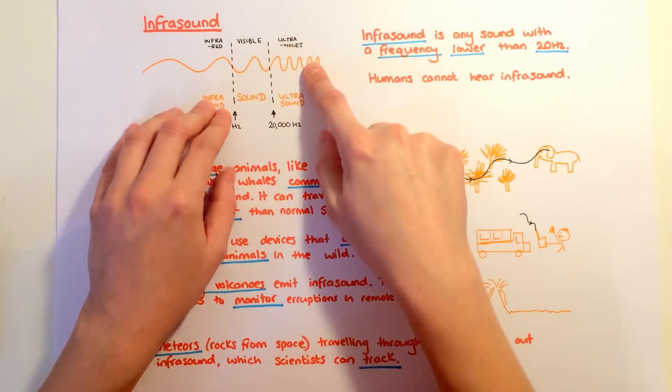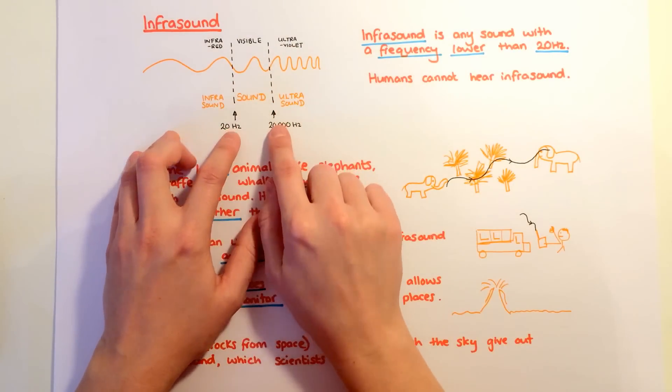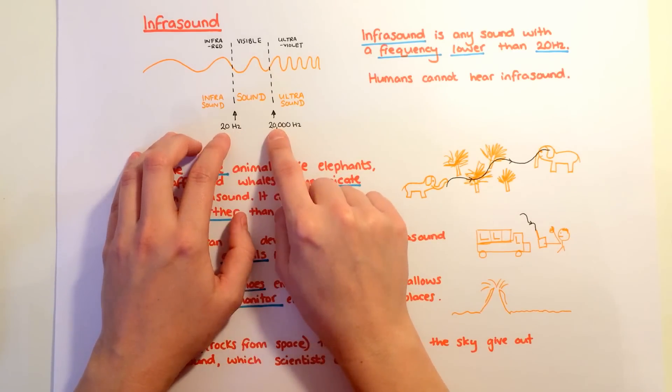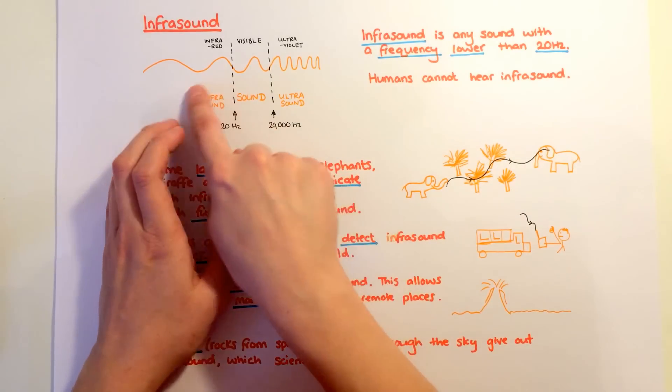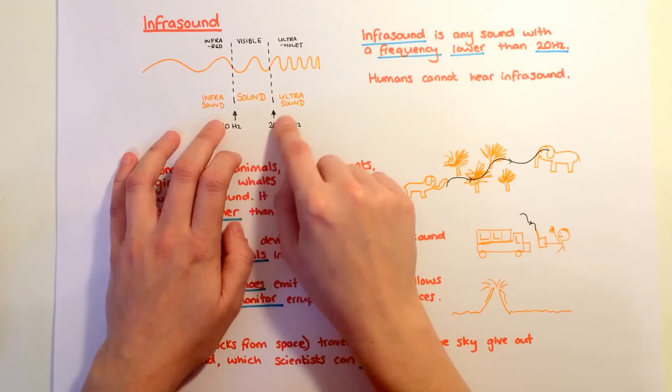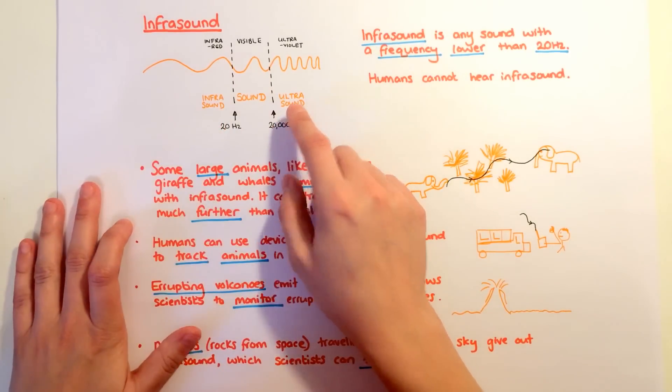It's very similar with sound waves. There's a range of frequencies that we can hear between 20 hertz and 20,000 hertz. Anything lower than that is known as infrasound. Anything higher than that is known as ultrasound.